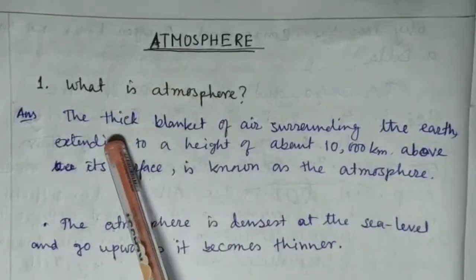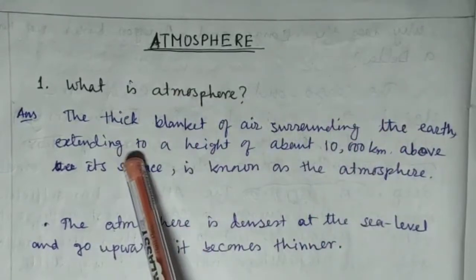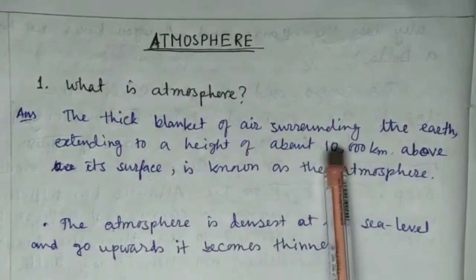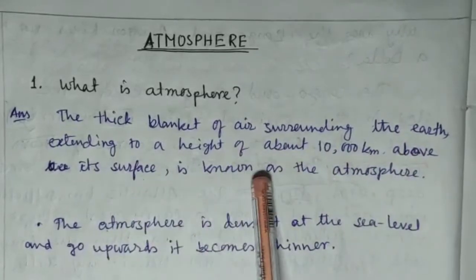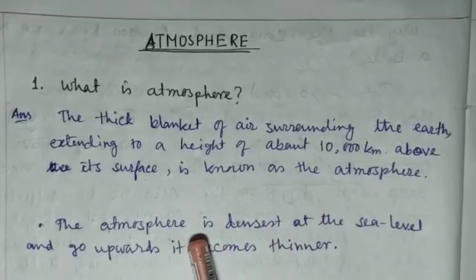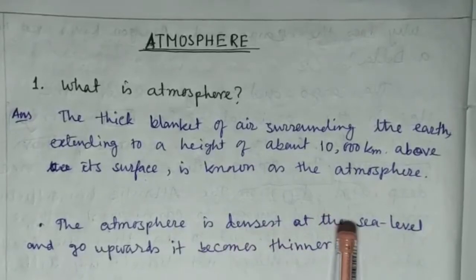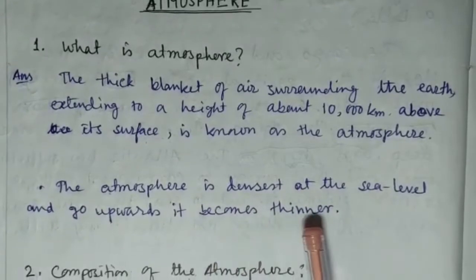What is atmosphere? The thick blanket of air surrounding the earth extending to a height of about 10,000 km above its surface is known as the atmosphere. The atmosphere is denser at the sea level and going upward it becomes thinner.